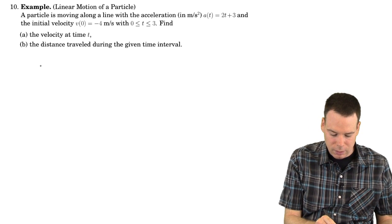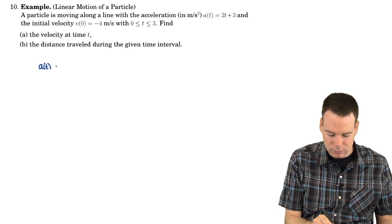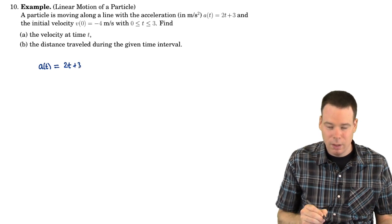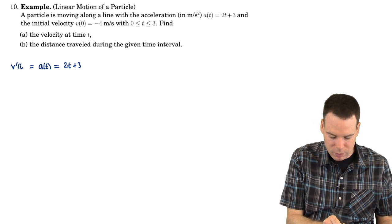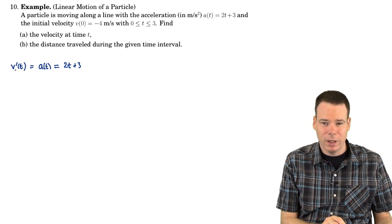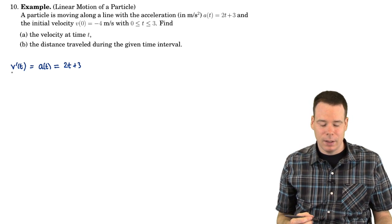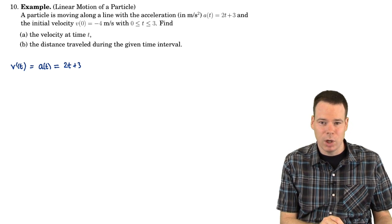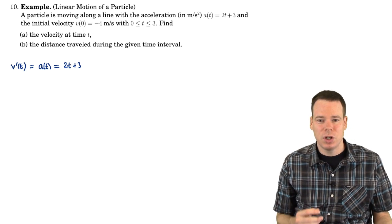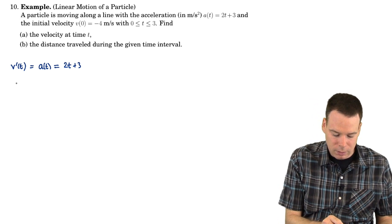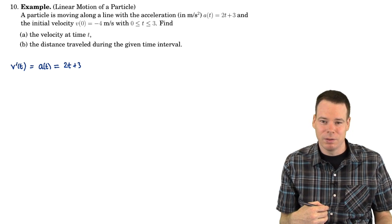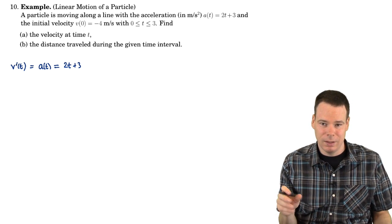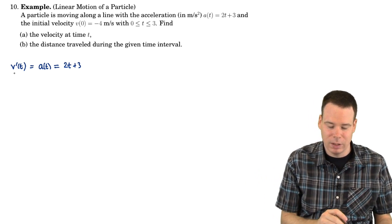The acceleration 2t + 3 is a rate of change — it's v'(t). So how can we start with the rate of change and recover the original function? That's what the net change theorem tells us: we can use an integral. By the net change theorem, v(t) minus v(0) — the net change in velocity over the interval from 0 to t — equals the integral from 0 to t of v'(t) dt, where a(t) = 2t + 3.